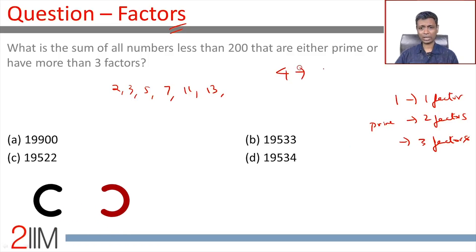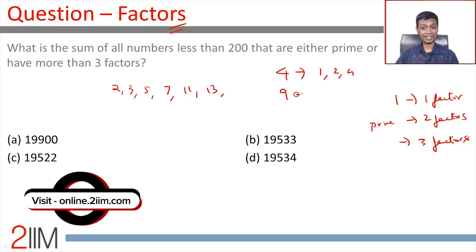Number 4 has three factors: 1, 2, and 4. 9 has three factors: 1, 3, and 9. Only numbers that will have three factors are squares of prime numbers. Prime number square.